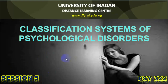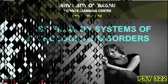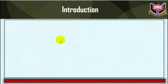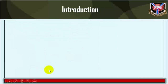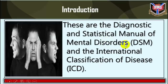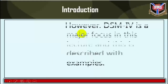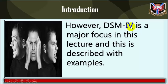Study Session 5: Classification Systems for Psychological Disorders. In this lecture you shall be exposed to the two classification systems of mental disorder commonly acceptable to mental health practitioners. These are the Diagnostic and Statistical Manual of Mental Disorders (DSM) and the International Classification of Disease (ICD). DSM-IV is the major focus in this lecture and is described with examples.